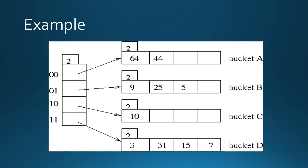And the binary value of 9, 25 and 5 contains 0, 1 at the end. So 0, 1 contains 9, 25 and 5 key values. The binary value of 10 has 1, 0 at the end. So it is placed at the 1, 0 bit.